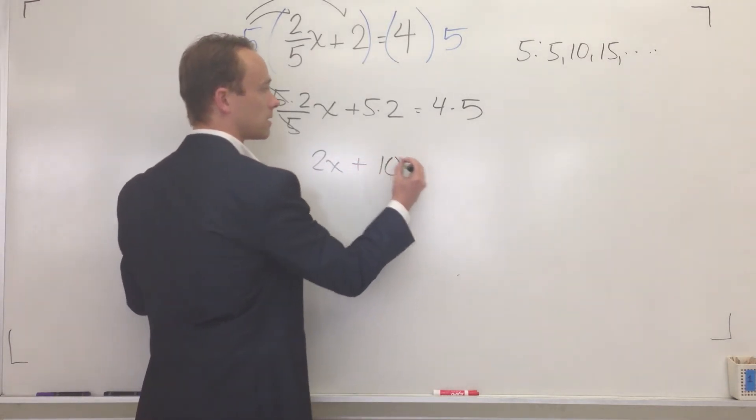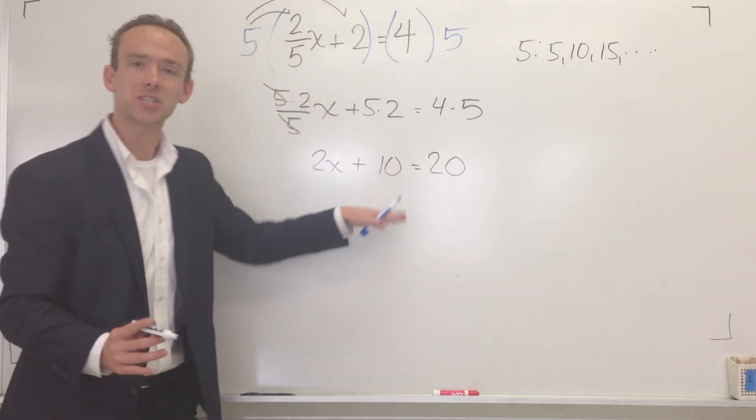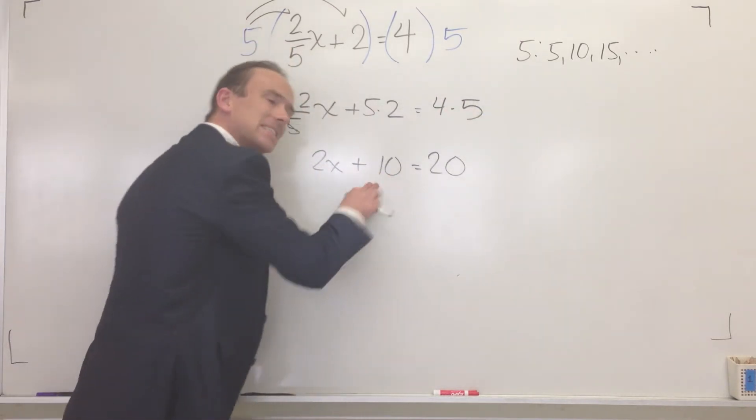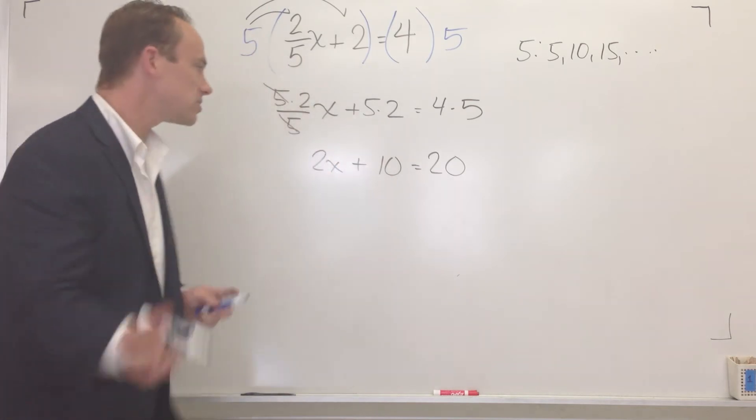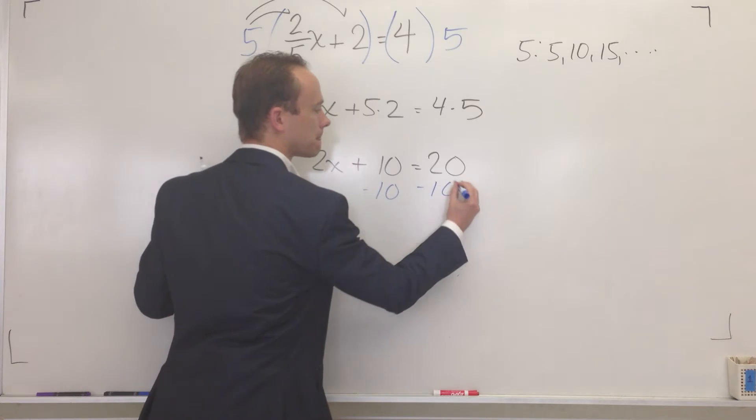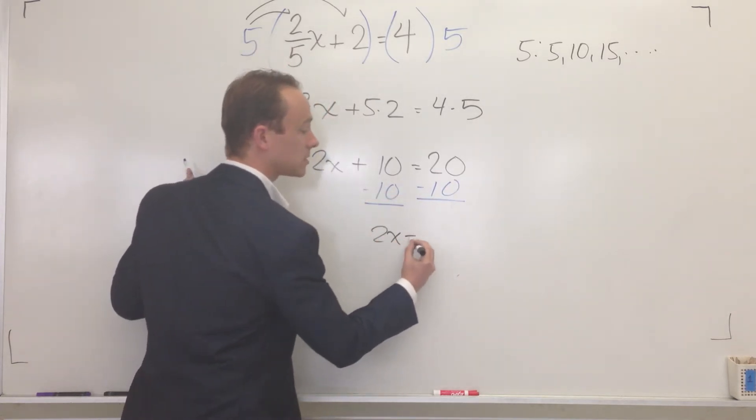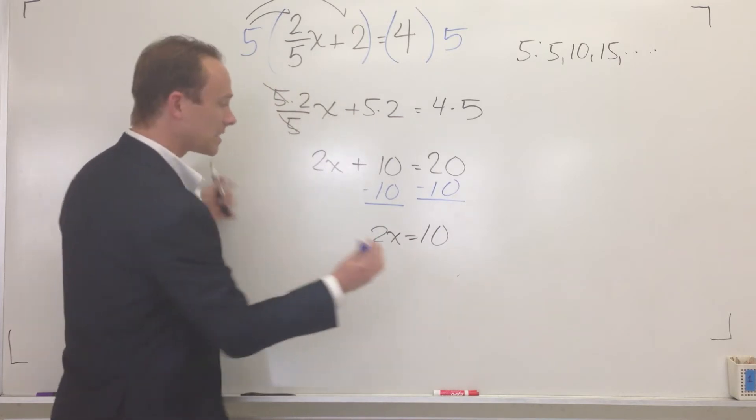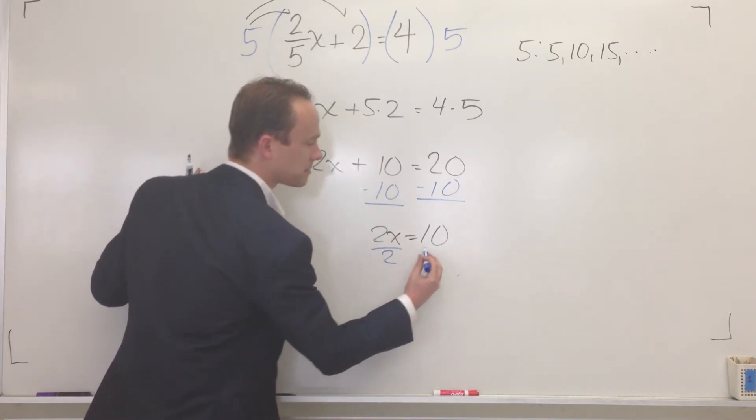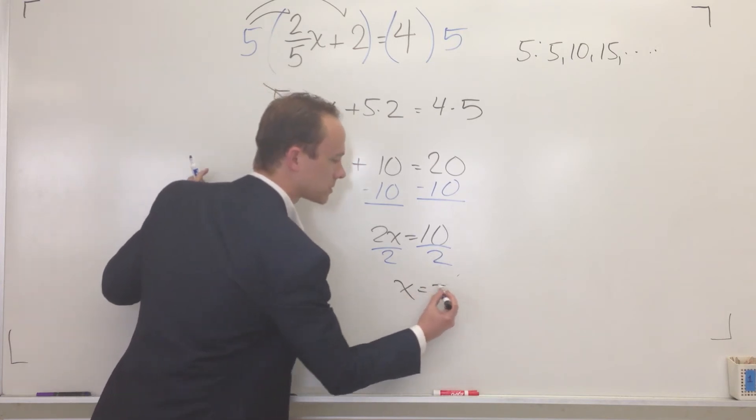So look. Now, we got ourselves an equation with no fractions. This is money. This I know we can do. So watch me. I'm going to minus ten. Now you get 2x is equal to ten. At this point, divide both sides by two. And you get x is equal to five.